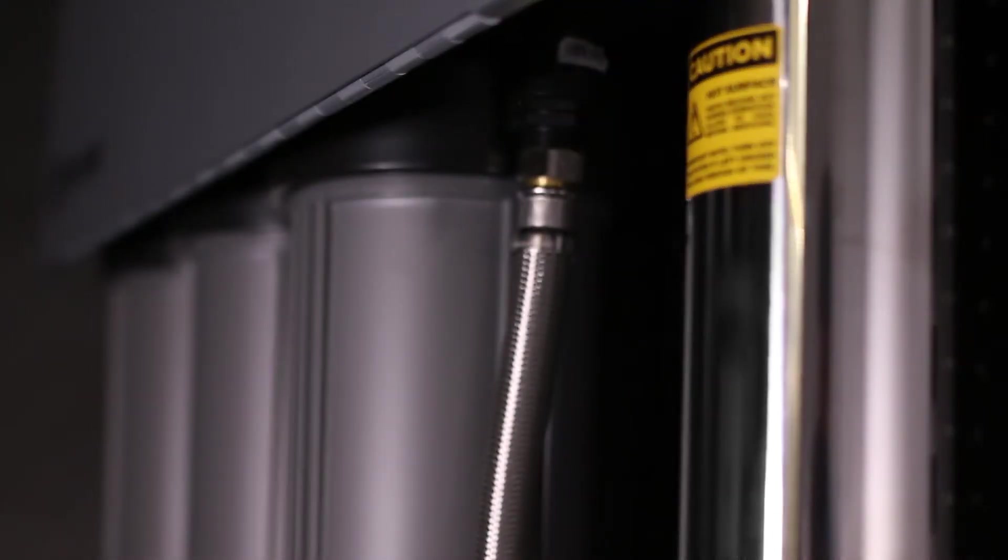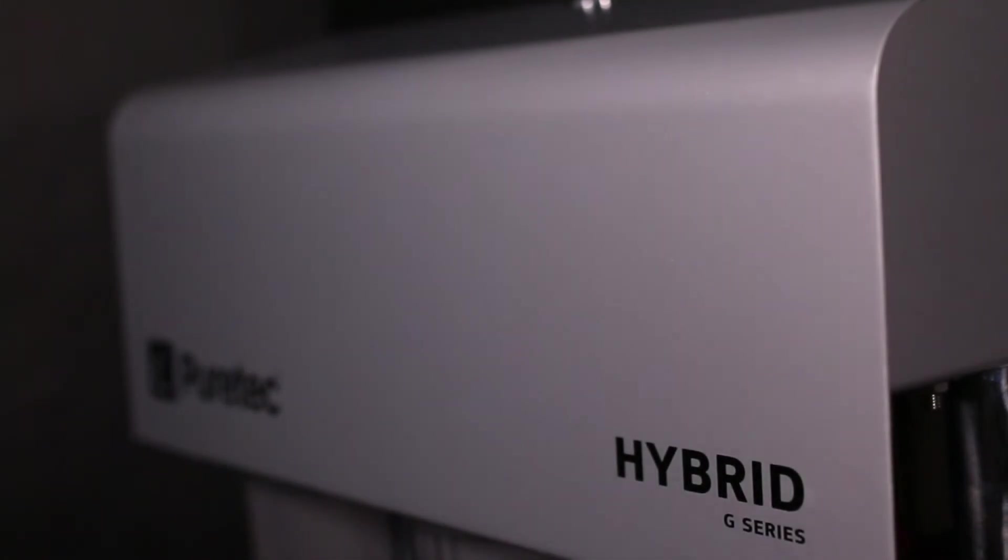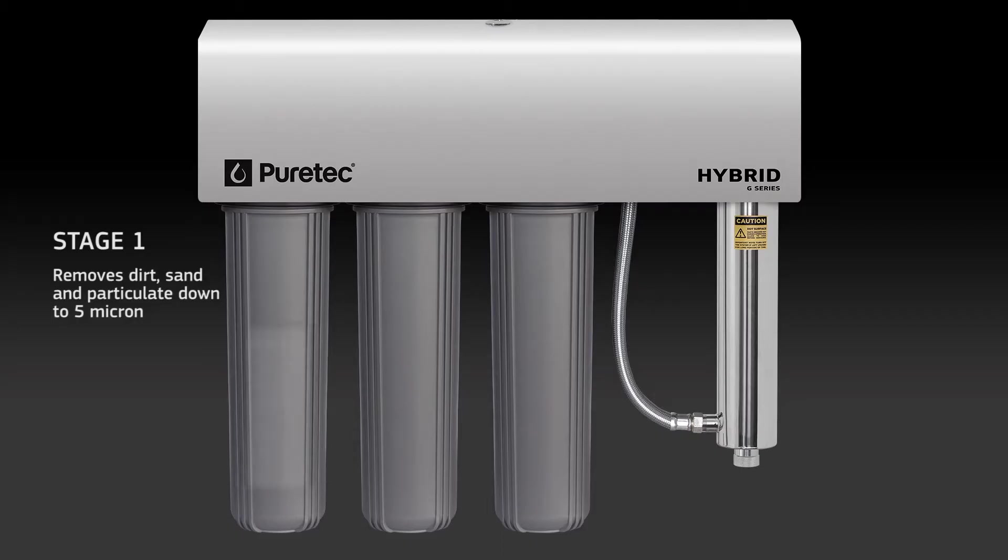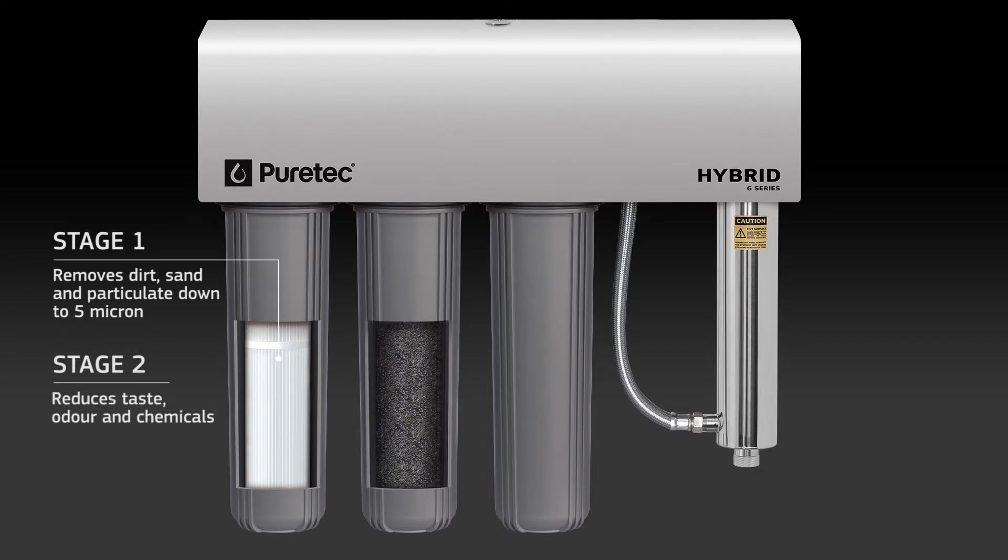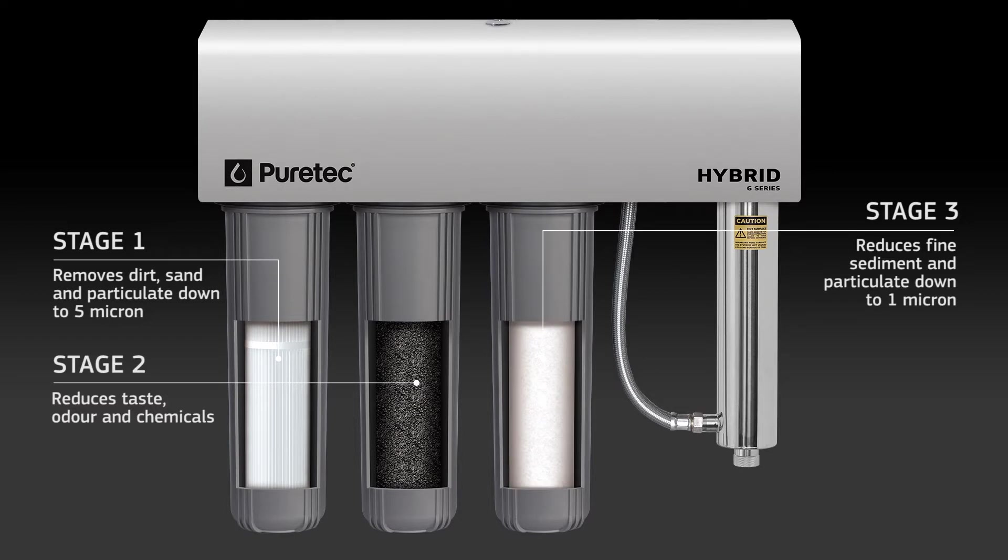Stage 1 removes dirt, sand and particulate. Stage 2 reduces taste, odor and chemicals. And stage 3 reduces finer sediment and particulate down to 1 micron. And then the water goes into the ultraviolet sterilizer, which is the final stage.